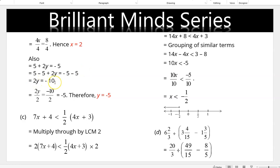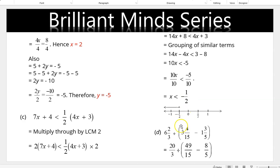This is a linear inequality with two fractions. Multiply through by the LCM which is 2: we get 14x + 8 < 4x + 3. Grouping like terms and simplifying gives x < −½. The answer is presented on a number line.